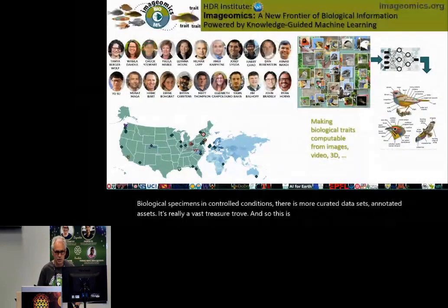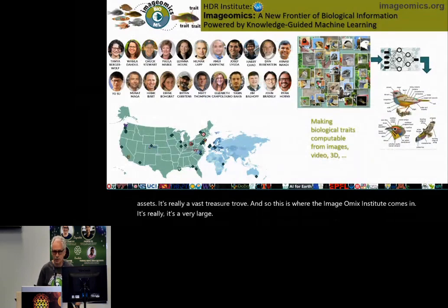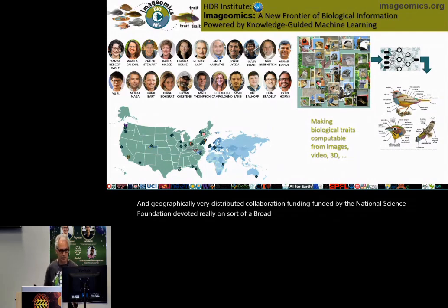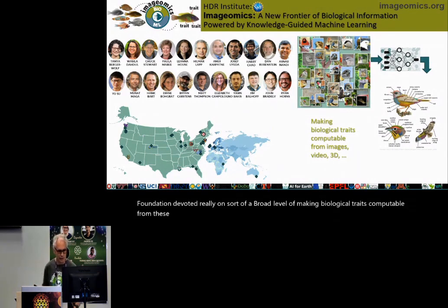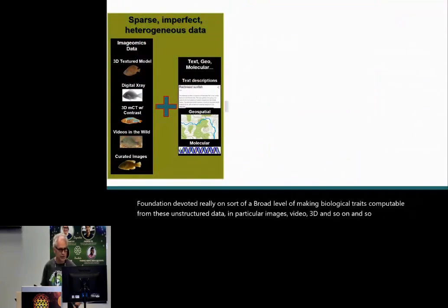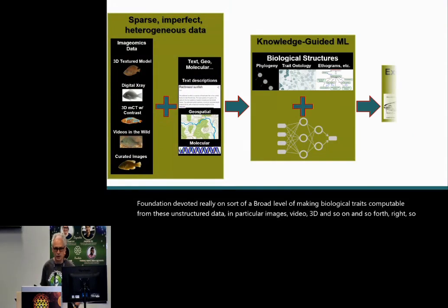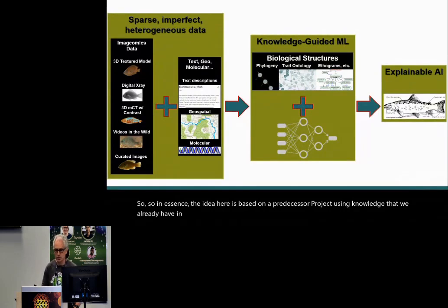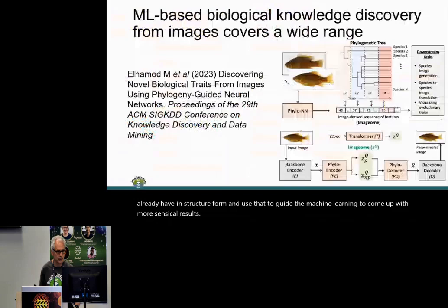This is where the Imageomics Institute comes in. It's a very large and geographically distributed collaboration funded by the National Science Foundation, devoted to making biological traits computable from unstructured data — in particular images, video, 3D, and so on. The idea is to use knowledge already in structured form to guide machine learning to produce more sensible, constrained results.